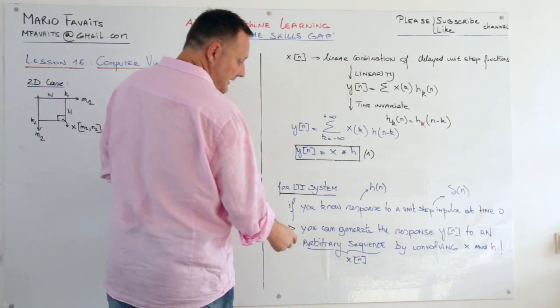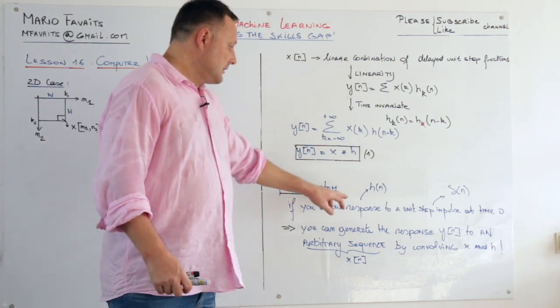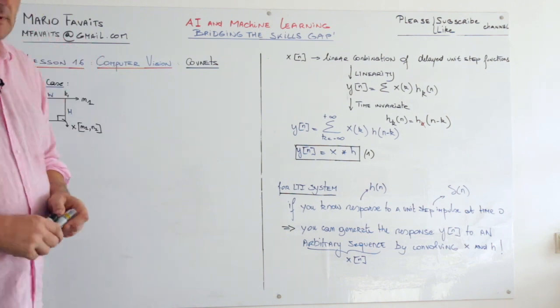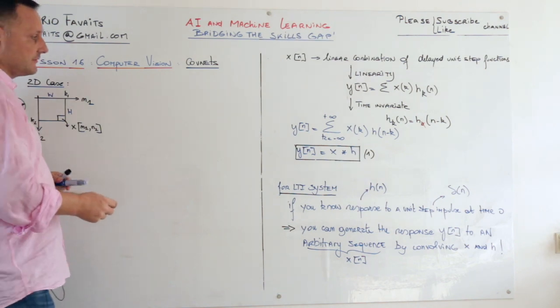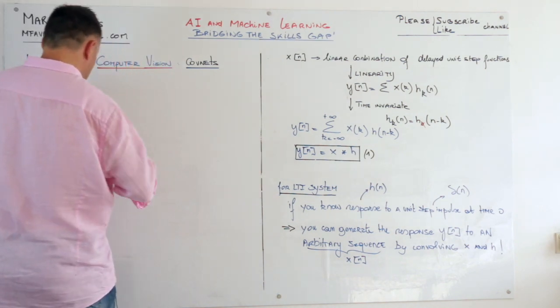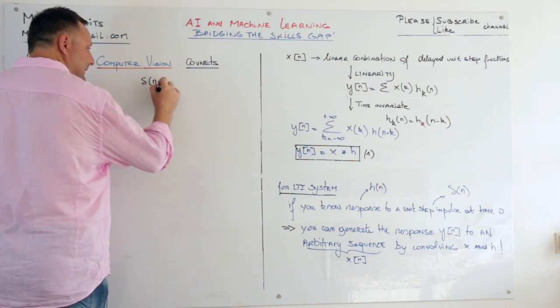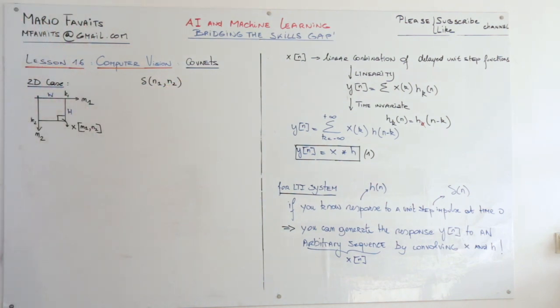So by convolving the arbitrary input sequence with the response to the unit stepping pulse. That's basically what it is. So I said we're gonna take a look at the 2D case and then immediately do an example. I'm not going to derive all the formulas, I'm just going to use the analogy from here. So in the 2D case our step function delta, our direct delta function is actually having two parameters.